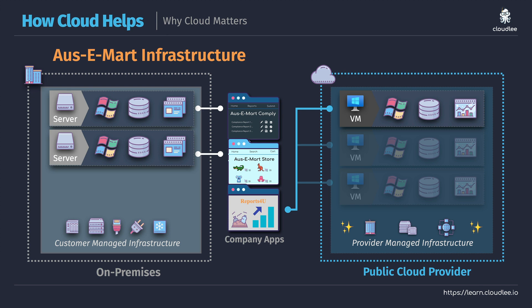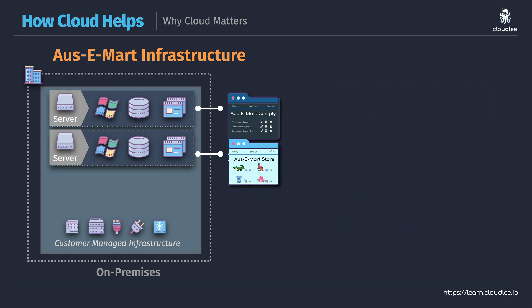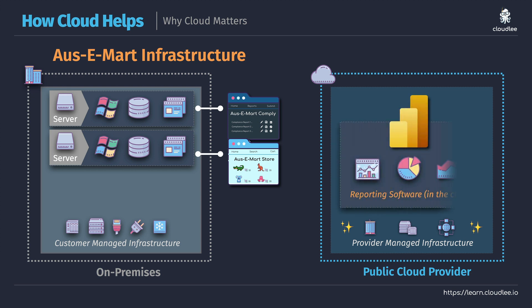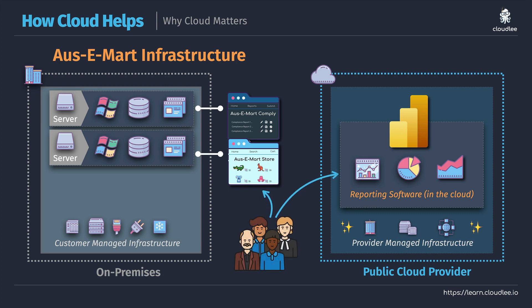We're only really just touching on the surface of what cloud can do. Cloud allows us to work with technology in a much different way than we traditionally would with on-premises infrastructure. Another example is that rather than using the Reports for You application on a server, we might choose to go to a public cloud provider that has an equivalent solution entirely built in the cloud and ready to go. In this way, not only do we not manage the underlying physical infrastructure, we don't have to manage application software, installation, or configuration. With reporting software built in the cloud, we just provide access to users and pay on a per-user basis — similar to how you might use Zoom for meetings or Dropbox for data sharing.